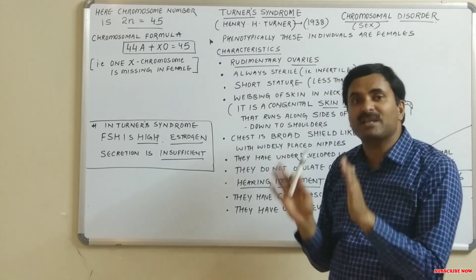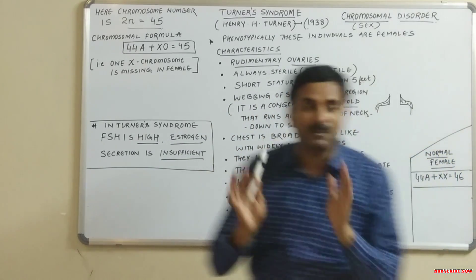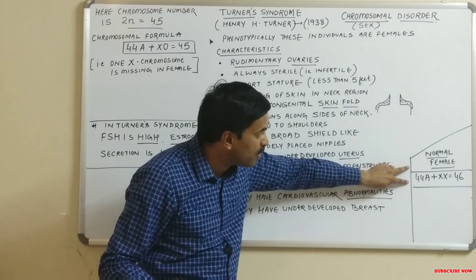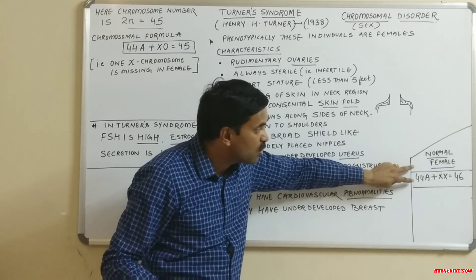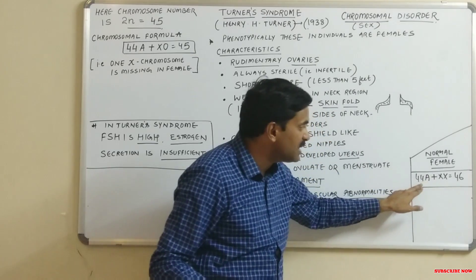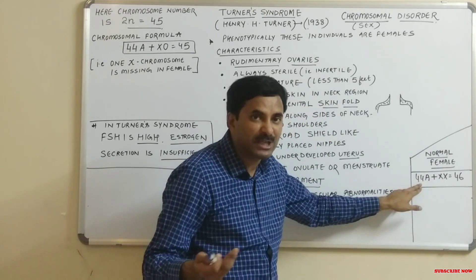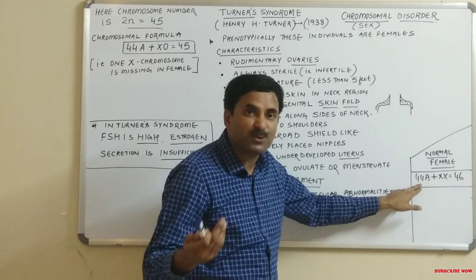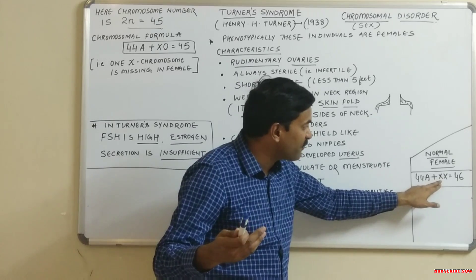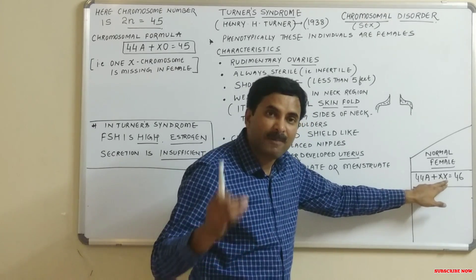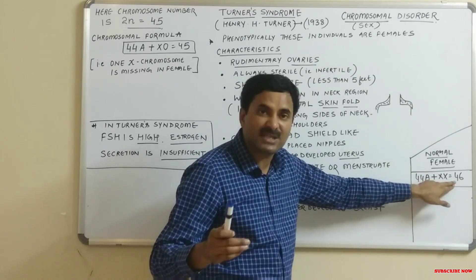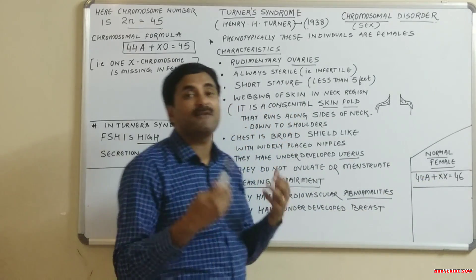If we talk about a normal female, the chromosomal formula is 44A + XX = 46. That means 44 autosomes (22 pairs) plus two sex chromosomes, the X and the X, giving a total of 46 chromosomes.